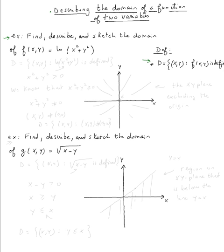Looking at the definition of a domain, the domain is the set of all (x, y) such that f(x, y) is defined. In other words, in this example, the domain will be the set of all (x, y) such that ln(x² + y²) is defined.